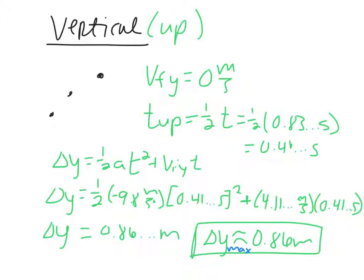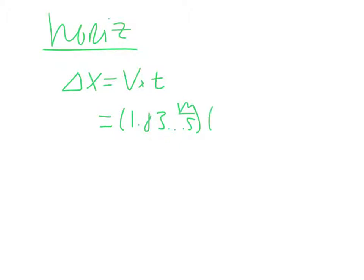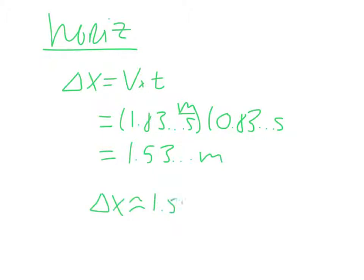The last thing asked is how far the ball goes — we're looking for delta x. The only equation we use in the horizontal for projectile motion is delta x = vx·t, because horizontal velocity is constant. We already know vx and we found time in part a. So: delta x = 1.83 m/s × 0.84 s = 1.53 meters. With two sig figs, the golf ball travels about 1.5 meters horizontally.